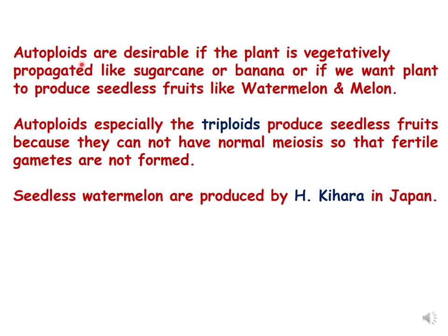Autoploids, especially triploids, are desirable if the plant is vegetatively propagated — like sugarcane, which can be vegetatively propagated — and if the plant is polyploid it will yield more because the size will be more. Similarly for banana, if you want a plant to produce seedless fruits like watermelon and melon, seedless watermelons were produced by H. Kihara in Japan. These are some of the desirable features of the polyploid and we will be learning more examples in subsequent slides.